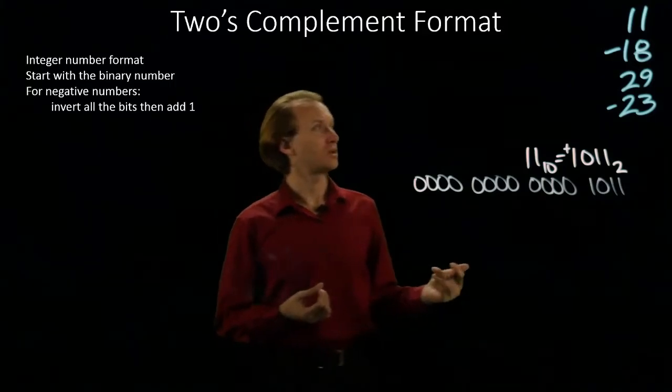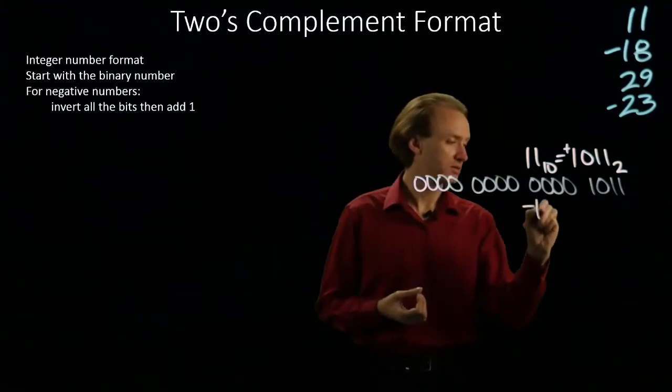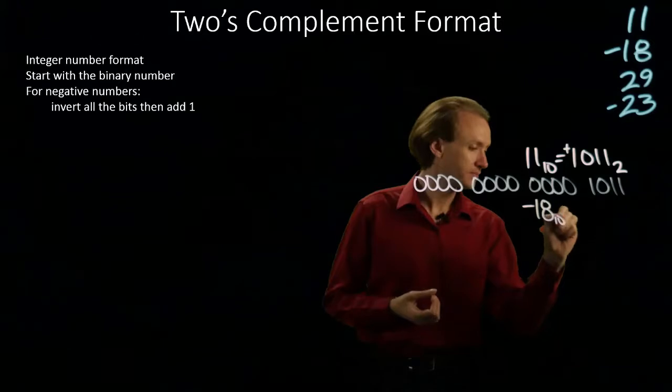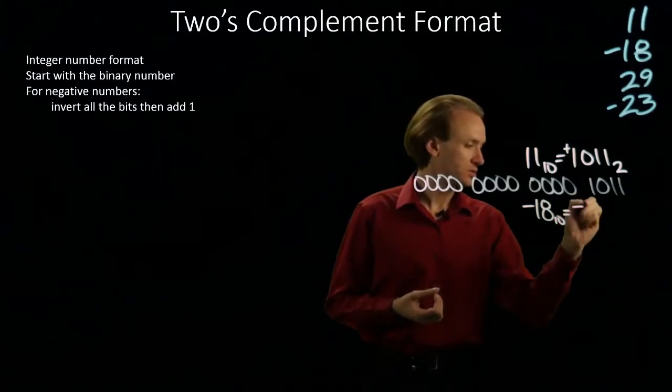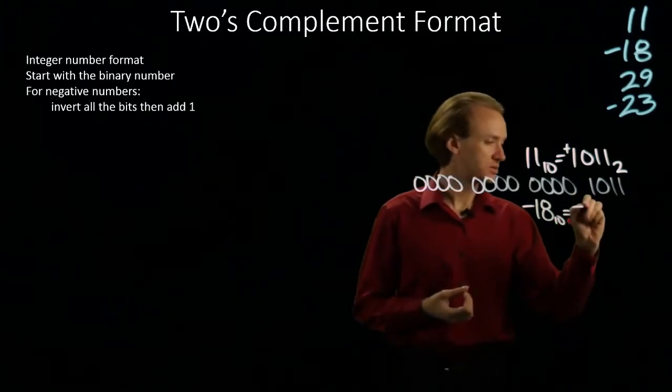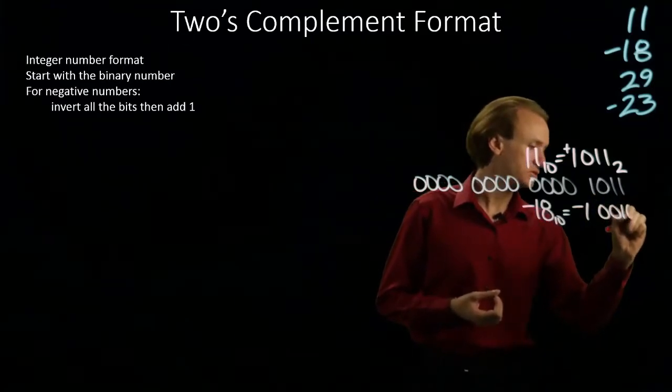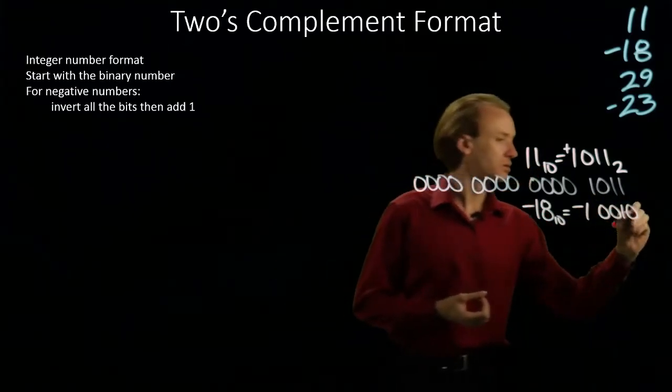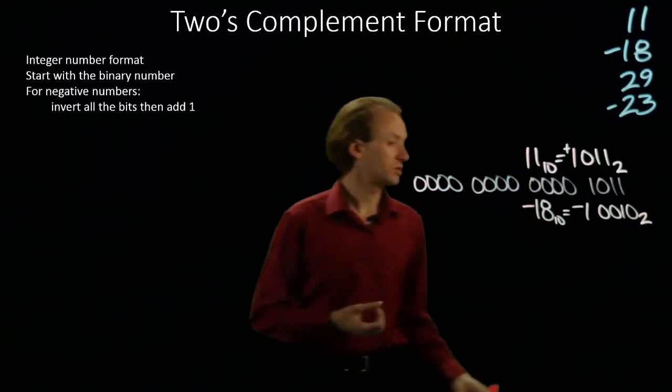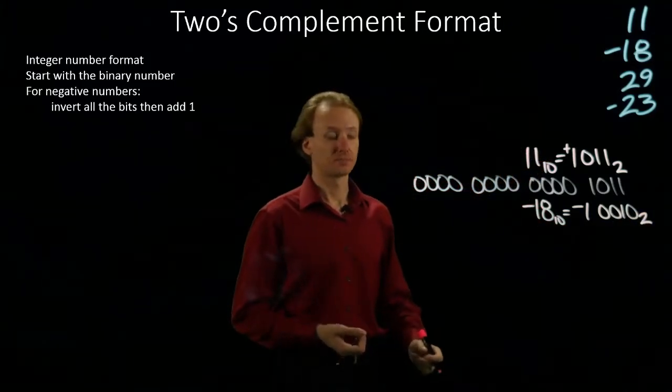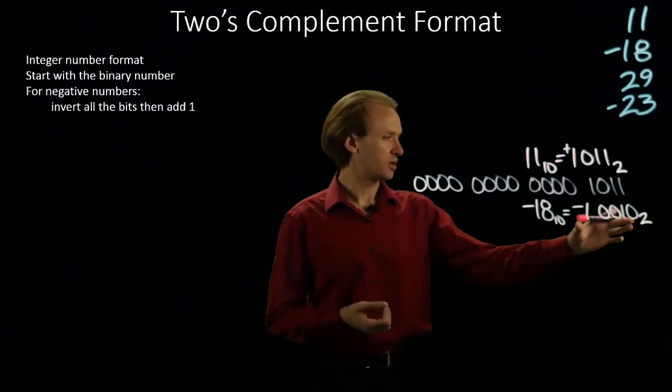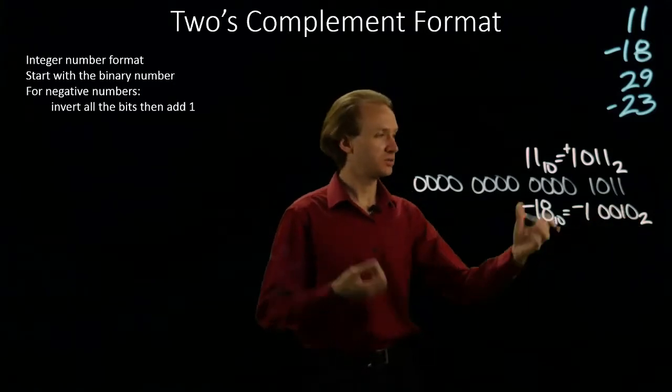The next number I've got is negative 18. So negative 18 is 16 plus 2. So there's negative 18 in binary. Again, I'll start by writing my magnitude in 16 bits.